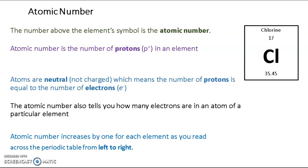In this video, I will be going over atomic number and atomic mass. The number above the element's symbol is the atomic number. The symbol is right here — the number above is 17, which is the atomic number of chlorine. The atomic number is the number of protons in an element.